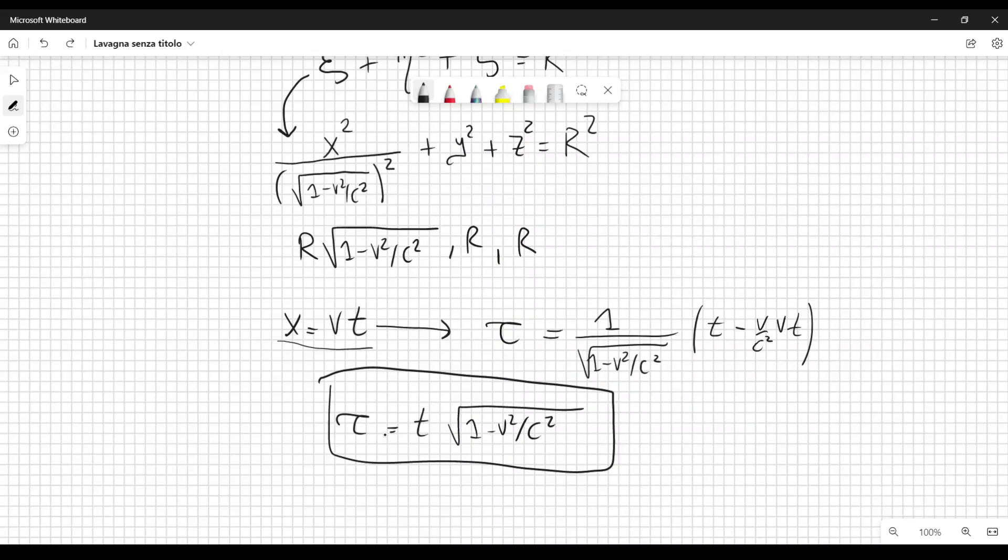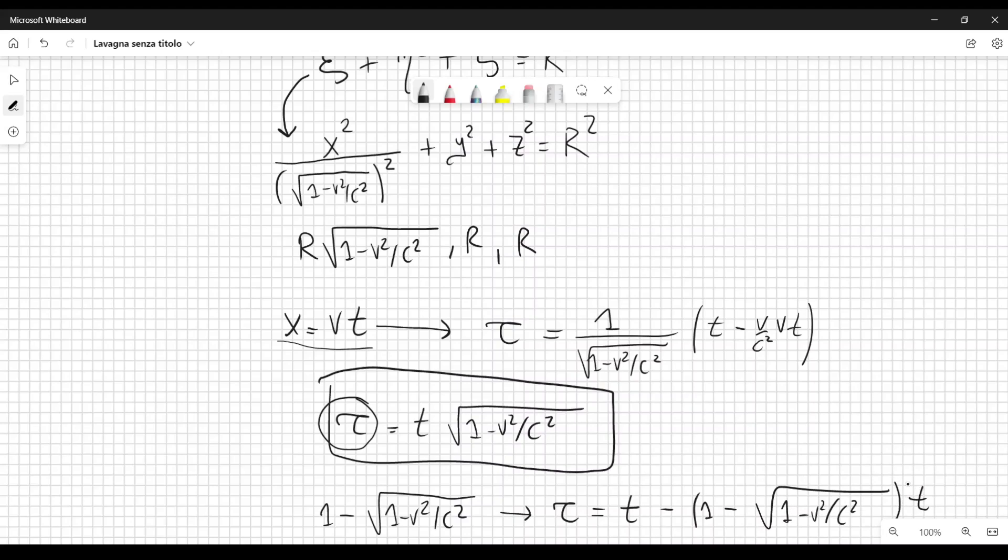Because from this, we can also rewrite the expression as τ = t(1 - √(1 - v²/c²)), like this. So when the clock that's measuring t measures one second, so this is the clock at rest with respect to the stationary system, the clock at rest with respect to the moving system loses 1 - √(1 - v²/c²) seconds with respect to t. That is the stationary clock.